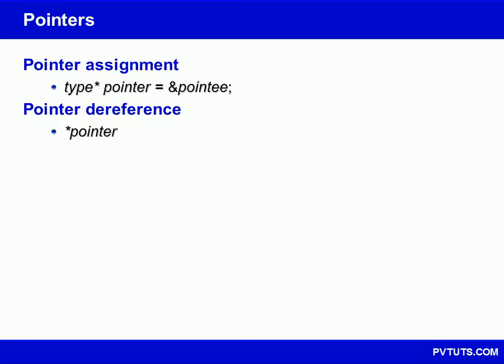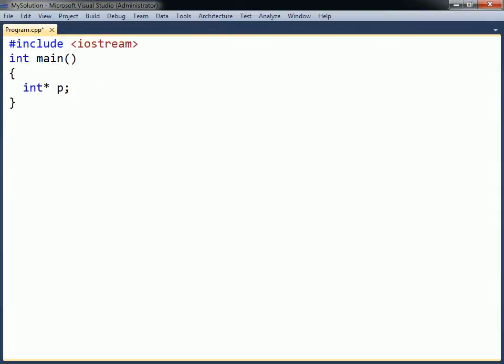A pointer is a variable that contains the memory address of another variable, called the pointee. Pointers are declared as any other variable, except that they have an asterisk placed between the data type and the pointer's name. The data type used determines what type of memory it will point to.